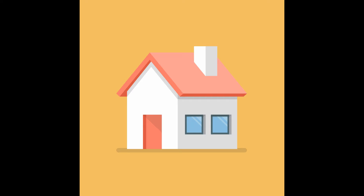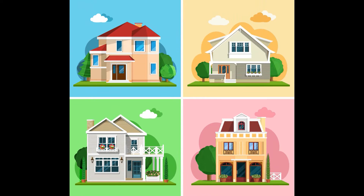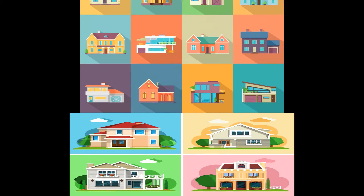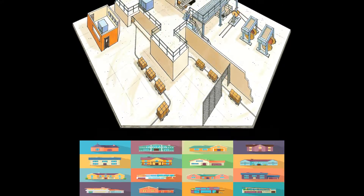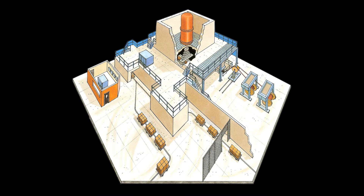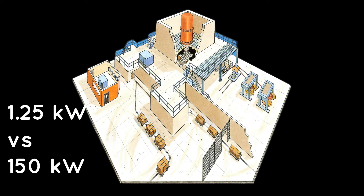The average American home uses 901 kilowatt hours per month, or approximately 1.25 kilowatts of power per hour. In comparison, e-Beams Ohio 1 accelerator is capable of producing 150 kilowatts hour after hour.